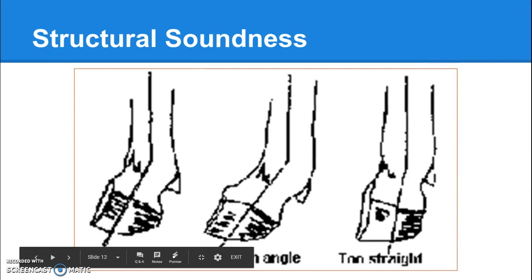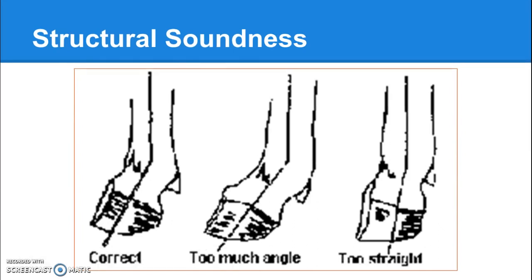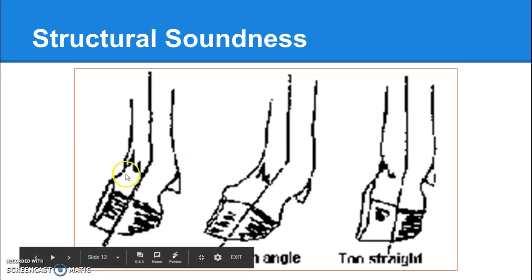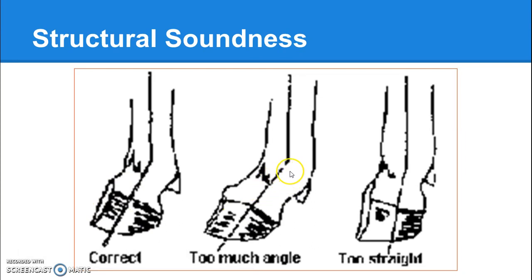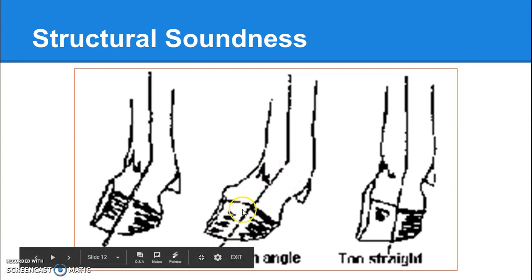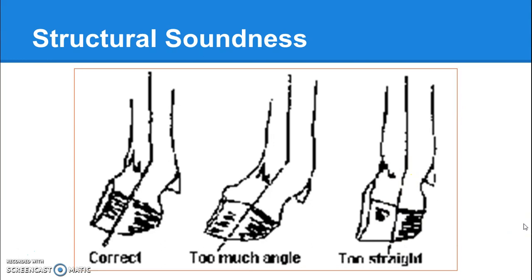You also want to look at the very bottom of the foot, between the fetlock and the hoof. The part of the foot between the fetlock and hoof is called the pastern. You want the angle of the pastern to mimic the angle of the hoof. If the pastern angle is too deep it makes the hoof angle too steep, and if it's too straight, that's just going to put even more pressure on the joints.